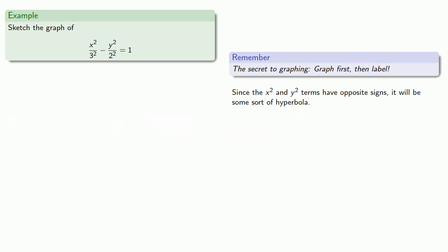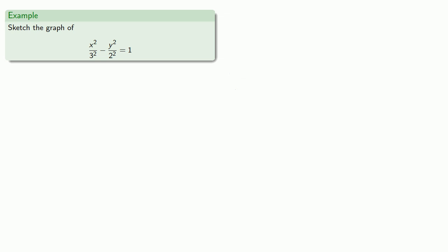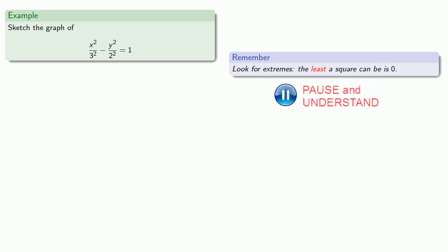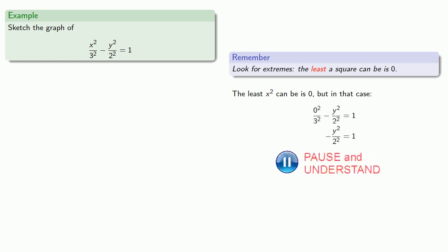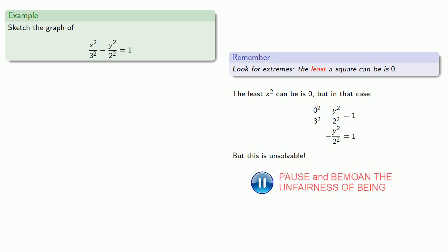It's also useful to note that the graph of this equation will be symmetric about the x and y axes. And something that's useful to do is to look for extremes. The least x squared can be is 0. And so the least x squared can be is 0. But in that case, our equation becomes unsolvable. It does mean that there is no point for which x is equal to 0.